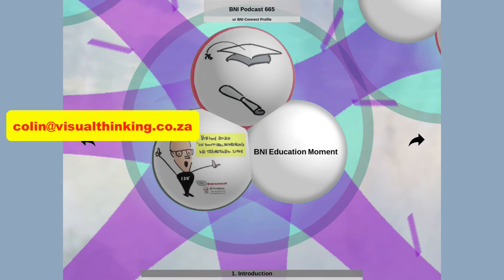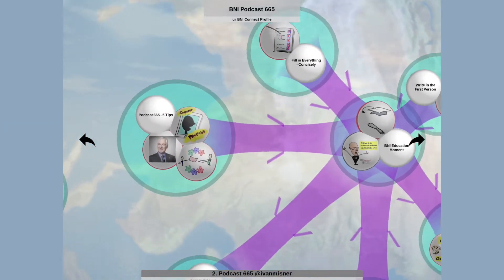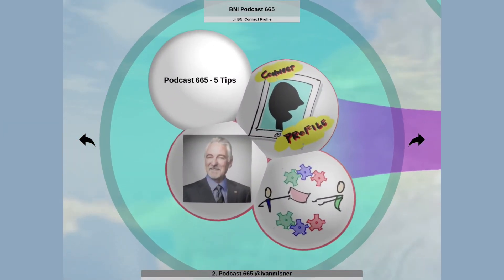Hello, I'm Colin Horner from BNI South Africa with another education moment for the global power team. And today I'm going to talk about podcast 665 where Dr. Ivan Meisner talks about five tips to optimize your BNI Connect profile into a referral generating machine.